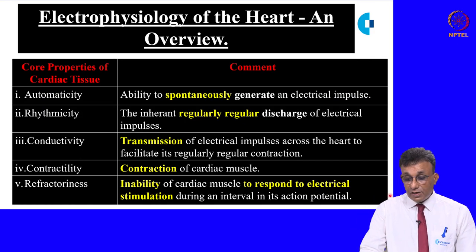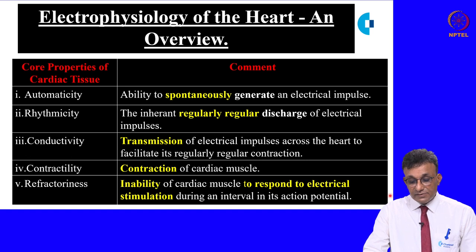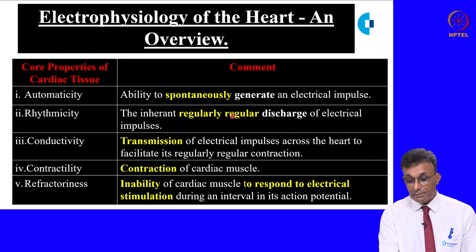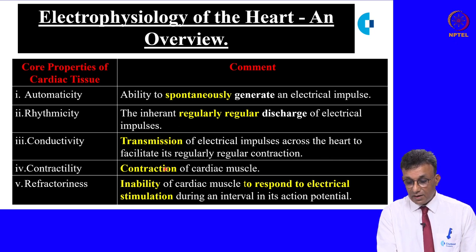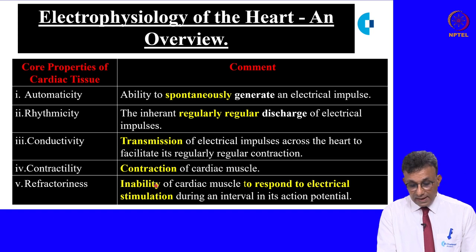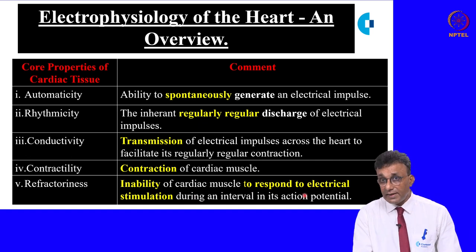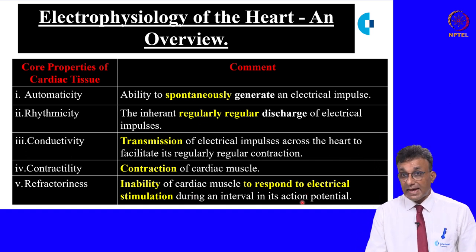To summarize the five core physiological properties: automaticity is the ability of the heart to spontaneously generate an impulse; rhythmicity is the inherent regularly regular discharge of a cardiac impulse; conductivity is the transmission of this impulse throughout the conducting system; contractility is contraction of the cardiac muscle as a whole; and refractoriness is the inability of cardiac muscle to respond to electrical stimulation during a particular interval in its action potential.